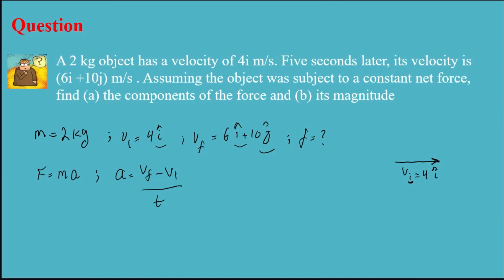Note: the 'i' in vi means initial velocity, while the 'i' in 4i means unit vector. My final velocity vf is 6i — in the x direction — plus 10j, which is in the y direction.